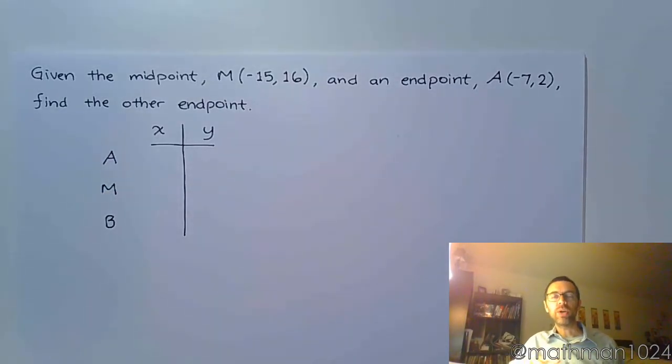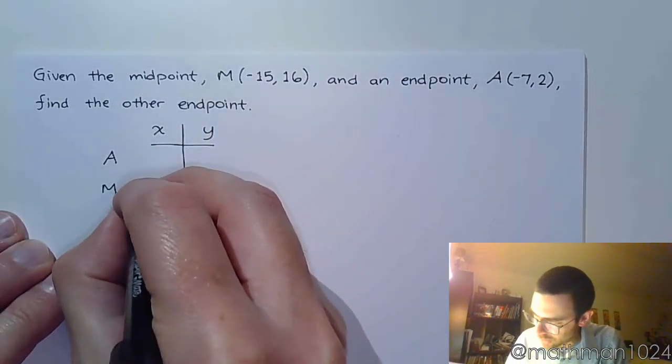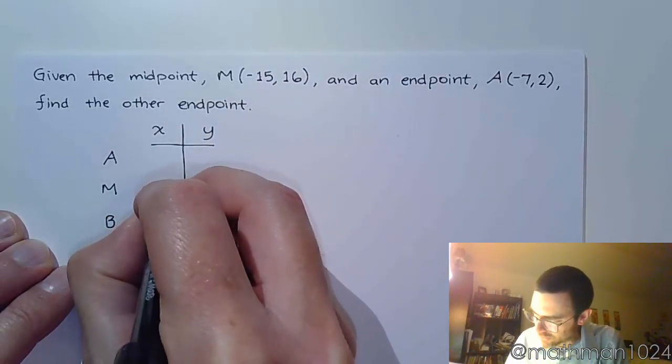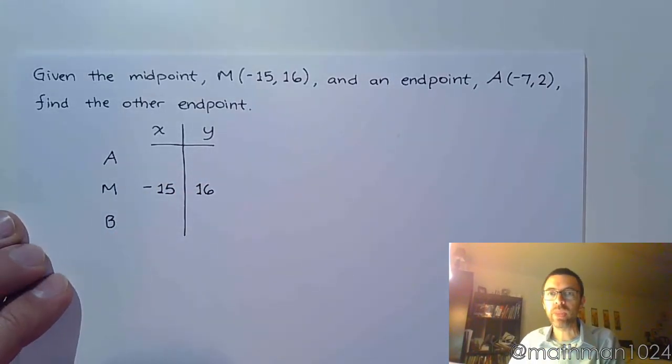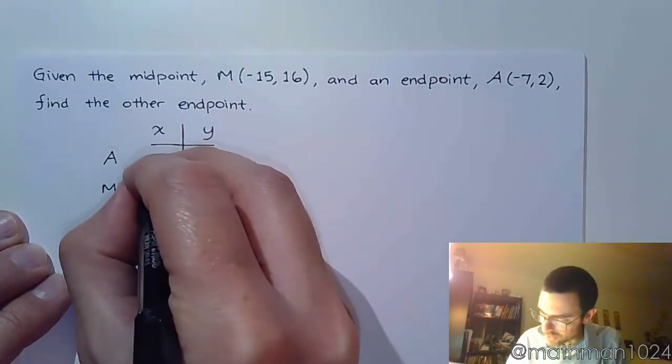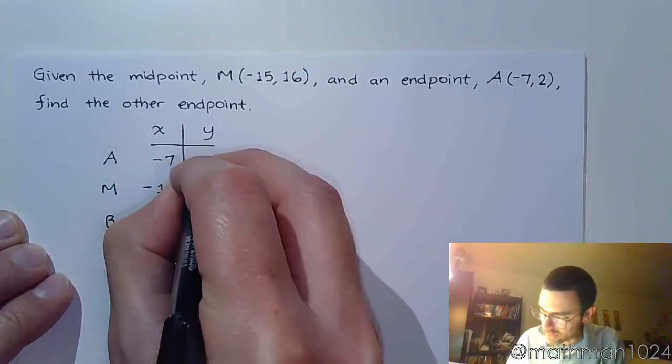The key thing to remember here is that in this setup, the midpoint has to be in the middle. It just has to be. So let's put in our ordered pairs. The midpoint right here in the middle is going to be at negative 15 comma 16. And your endpoint, one of the endpoints is negative 7, 2. So let's put that right here, negative 7, 2.